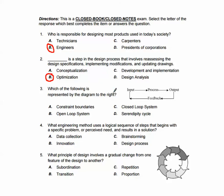Which of the following is represented by the diagram to the right? So if we have an input, process, output, and then some feedback, that's a closed loop system because there's no way to get out of this particular closed loop. What engineering method uses a logical sequence of steps that begins with a specific problem or perceived need and results in a solution? That's the design process.